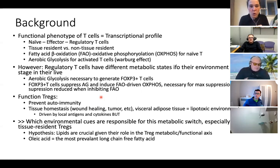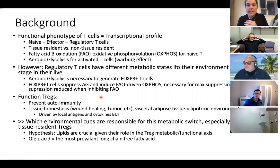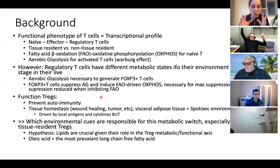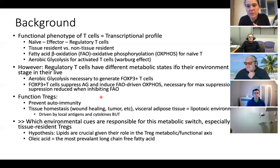As background: we have B and T cells in the adaptive immune system. Among the T cells there are different subtypes — naive T cells, effector T cells that kill pathogens, and regulatory T cells that keep everything under control and avoid disproportionate reactions of the immune system to foreign pathogens.